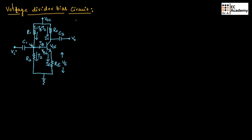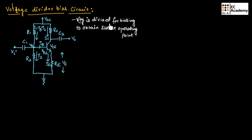In voltage divider bias circuit, the voltage is divided for biasing to obtain a stable operating point. This is the circuit for voltage divider biasing. Here, VCC is the biasing voltage that is applied across both the collector terminal as well as the base terminal. At the base terminal, two resistors are connected — R1 and R2 — where the voltage will be divided. That's why it is known as a voltage divider bias circuit.